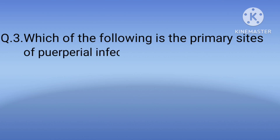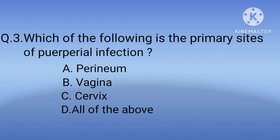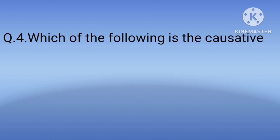Question 3: Which of the following are the primary sites of puerperal infections? Option A: perineum, option B: vagina, option C: cervix, option D: all of the above. The correct option is D, all of the above — perineum, vagina, and cervix are the primary sites of puerperal infection.